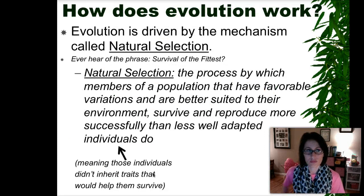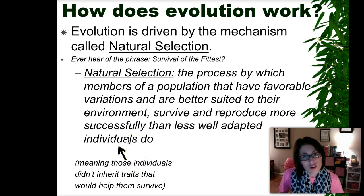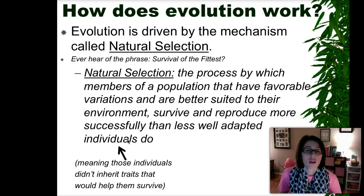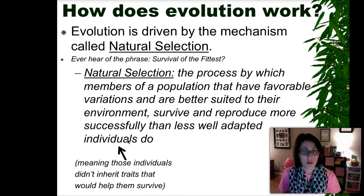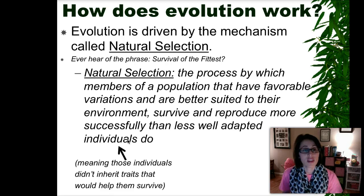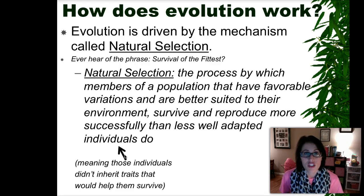So how exactly does evolution work? Evolution is driven by the mechanism that we call natural selection, and Darwin actually coined that term. Have you ever heard of the phrase 'survival of the fittest'? Well, that is natural selection. Natural selection is the process where members of a population that have favorable variations — inherited through the passing down of traits from previous generations — are better suited to their environment. Therefore, they are able to survive and reproduce, and then pass on their traits to their offspring. Those individuals that don't inherit the favorable traits are much less likely to pass their traits on.